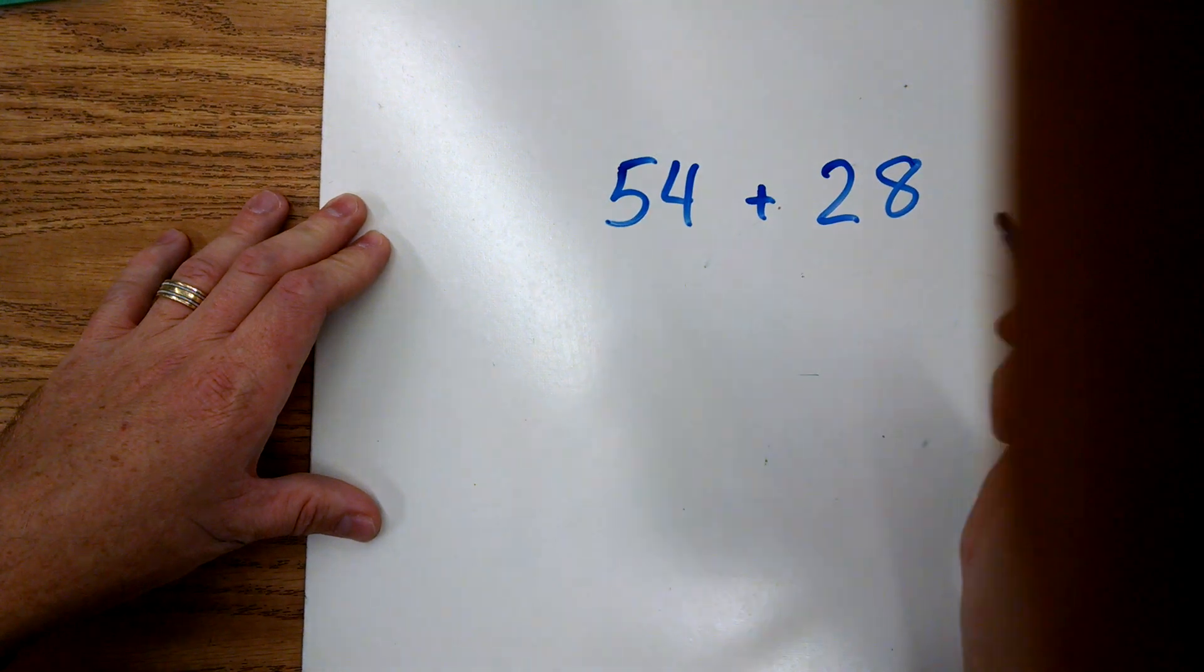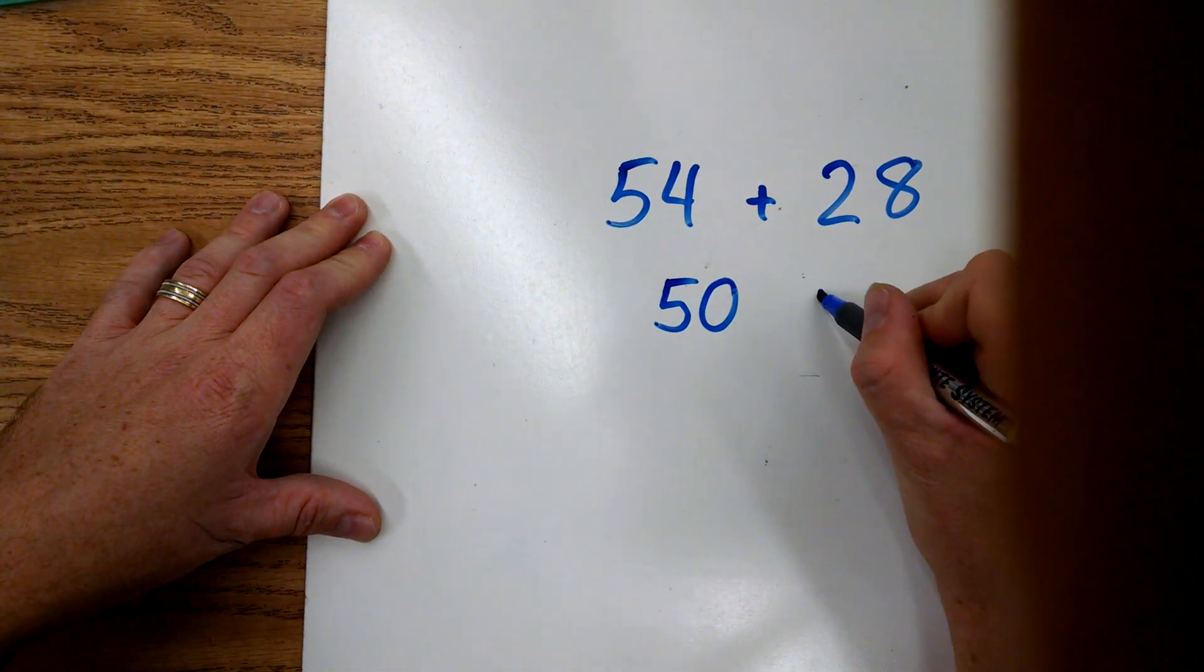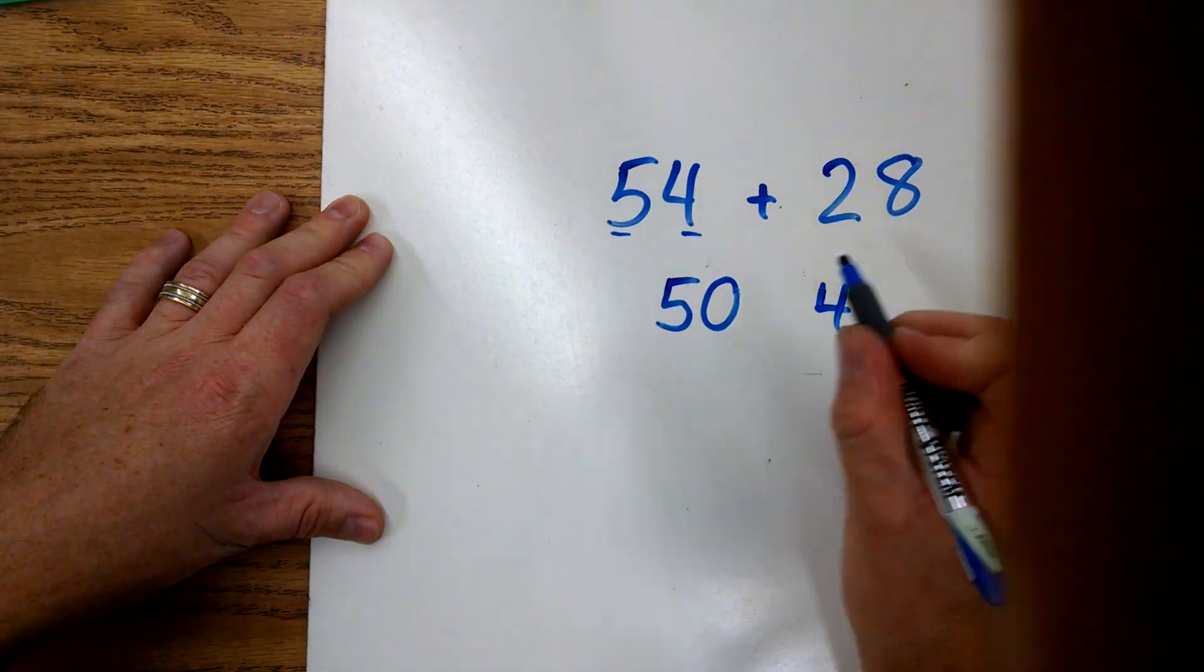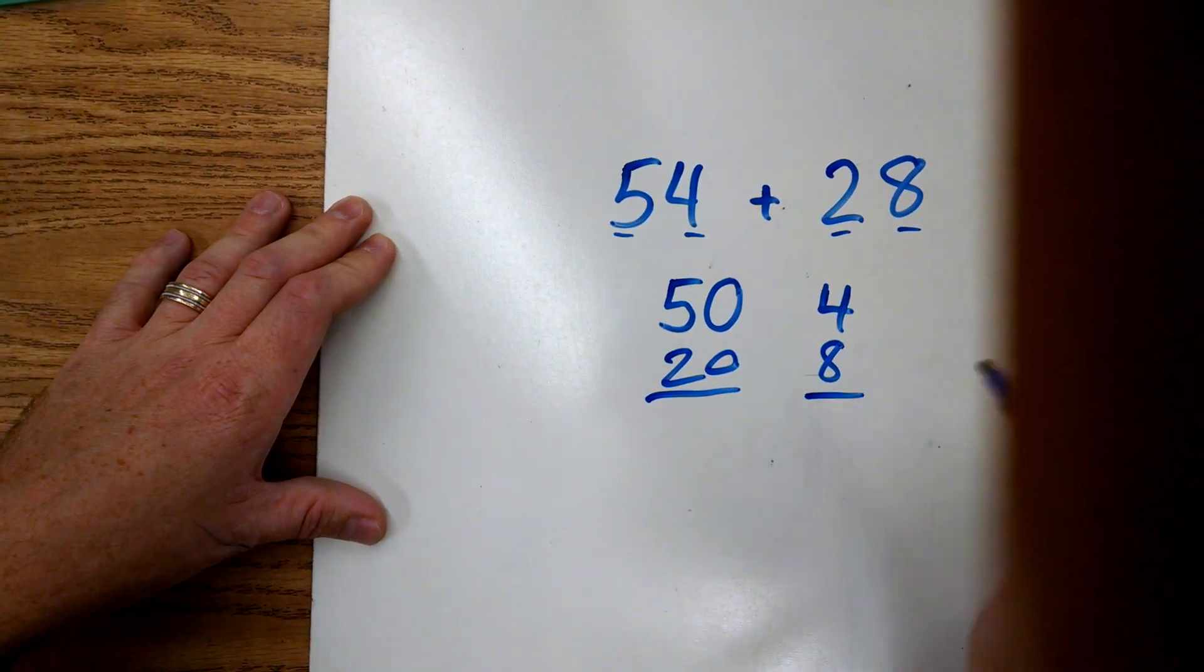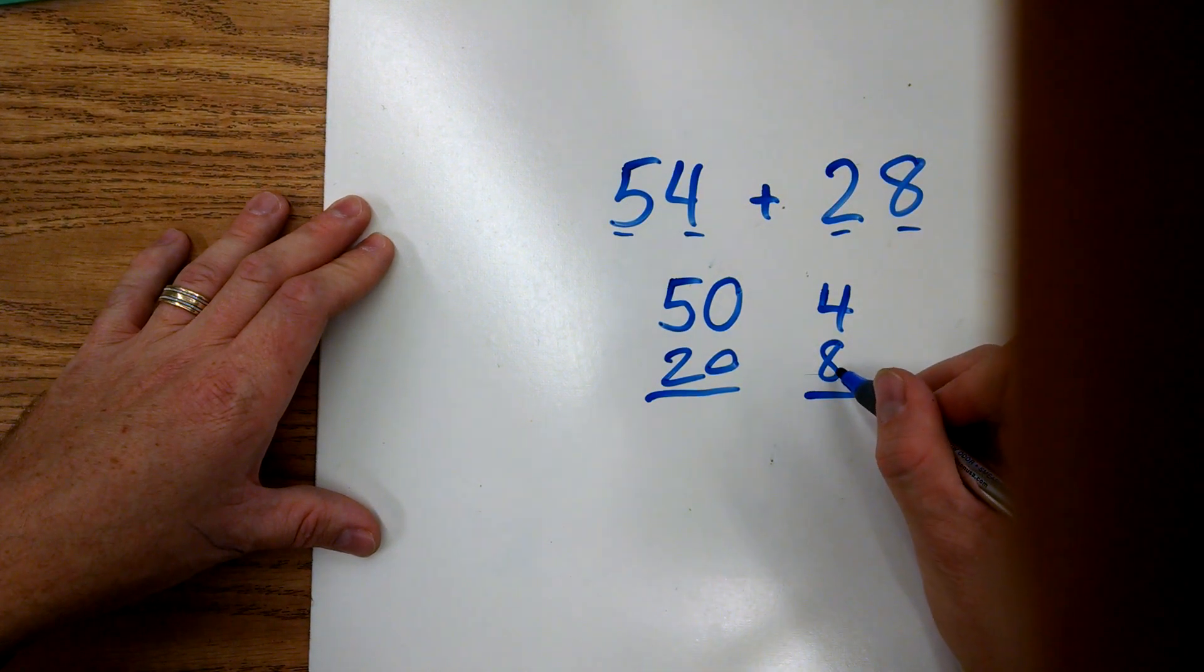First thing we're going to do is break apart or decompose our numbers: 50 and 4. Then we're going to break apart or decompose 20 and 8. Next thing we do is we add each of these up. 8 plus 4...